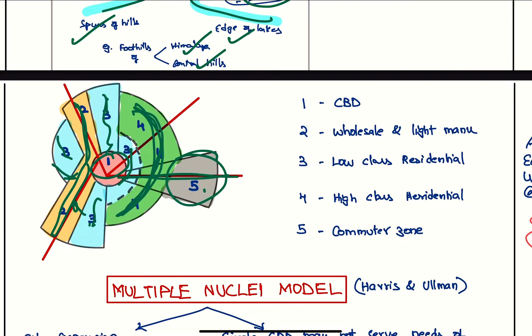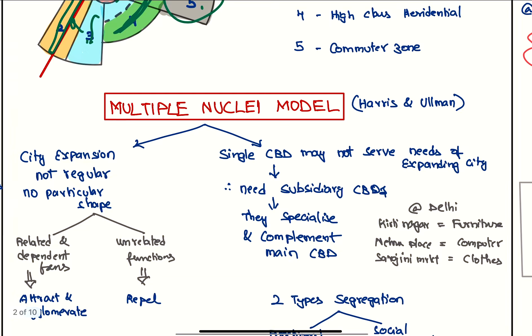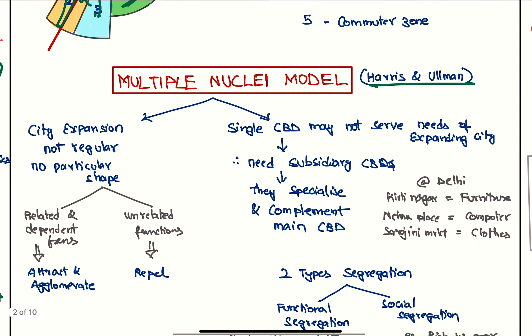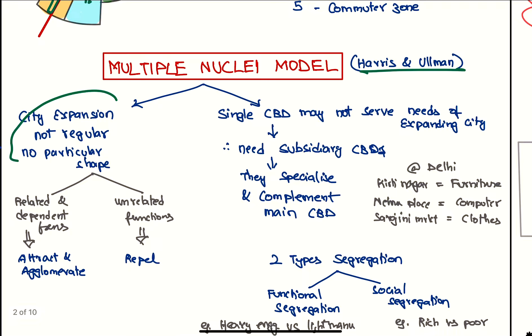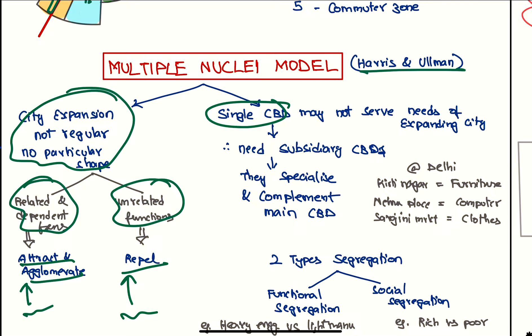Next we have the multiple nuclei model given by Harris and Ullman. According to them, city expansion is not regular and won't happen in any particular shape. Related and dependent functions attract and agglomerate, and unrelated functions repel. For example, heavy engineering units come in one place and light manufacturing units go to another place. Also, a single CBD may not be able to serve all the needs of expanding city. Therefore, subsidiary CBDs will pop up, later they will specialize and complement the main CBD.